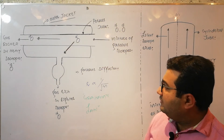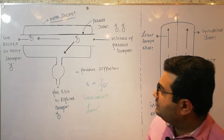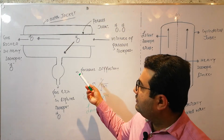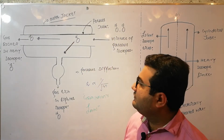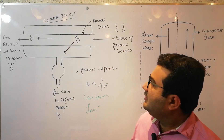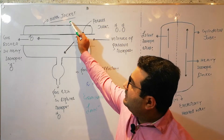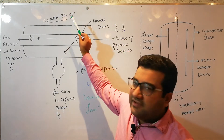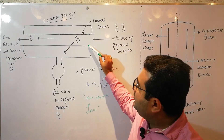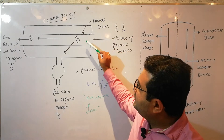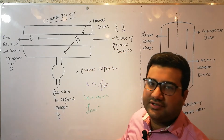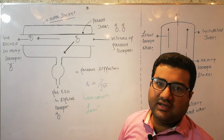The apparatus which is used in the separation of isotopes by the gaseous diffusion method is in front of you. Here is an outer jacket which is insulated. These are two porous tubes, and this one is a bulb for the collection of the isotopes.